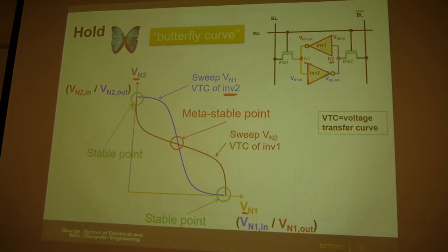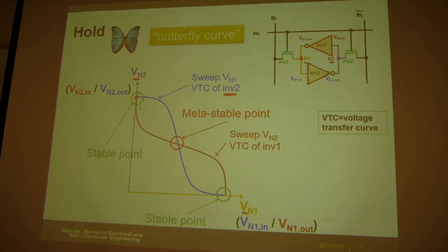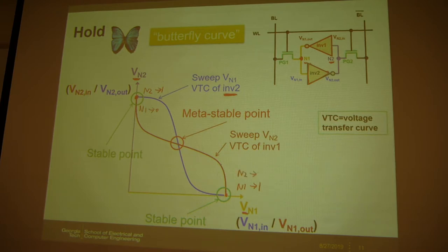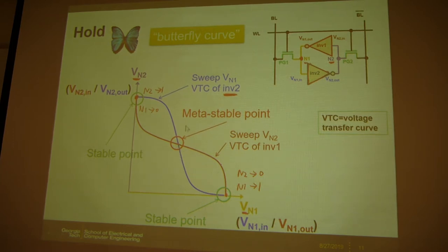The two outer intersections on the butterfly curve are the stable operating points: one where N1 = 0 and N2 = VDD, and one where N1 = VDD and N2 = 0. These represent the two data states. The middle intersection is the metastable point, which will be explained further.